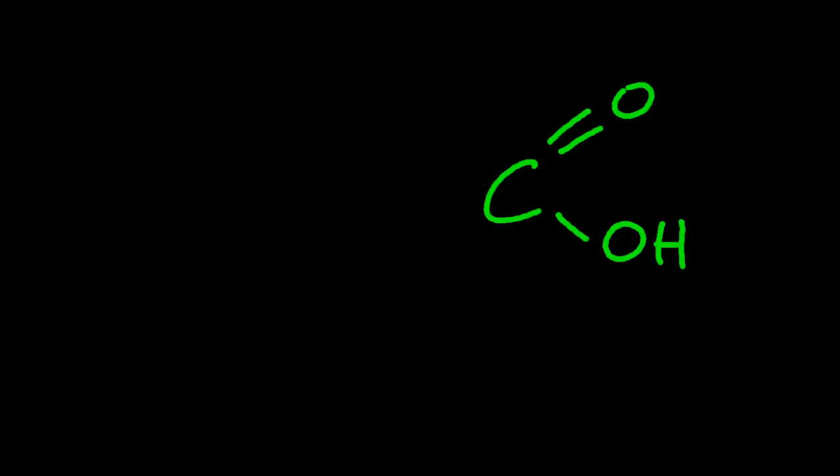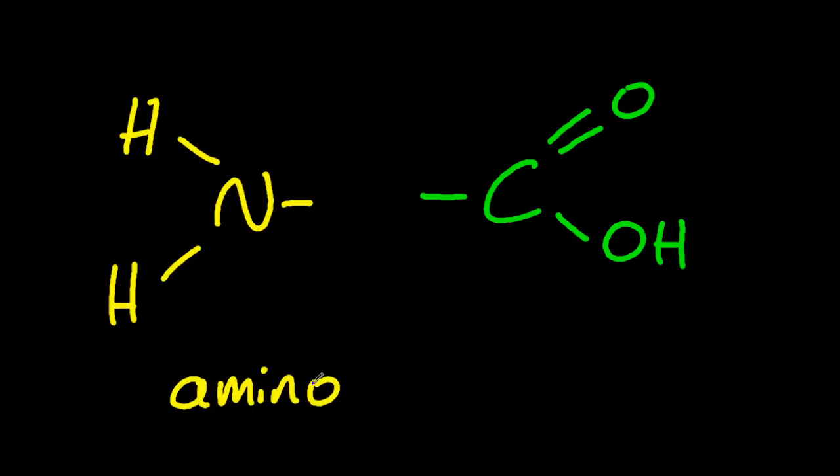That's the carboxylic acid grouping there. That hydrogen ion can come off. And there's the amino group there. Those hydrogens don't normally come off. It's basic. So that's amino, and that's acid.